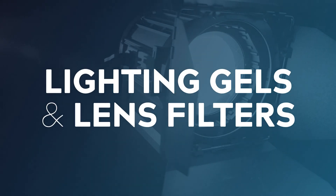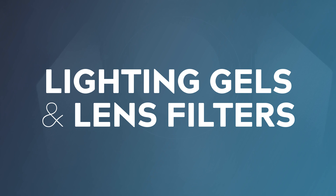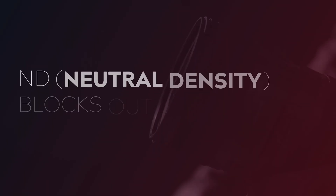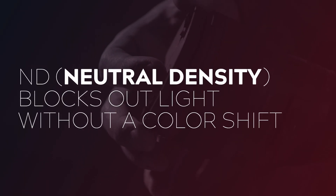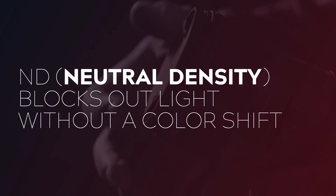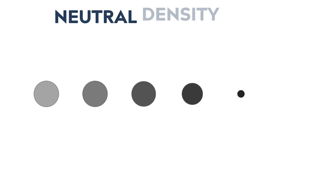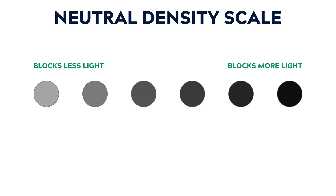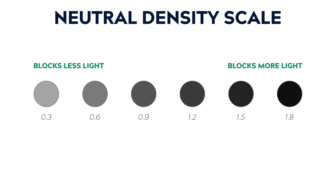Now let's look at how stops relate to filtration — lighting gels and lens filters. ND, or neutral density, is the type of filtration that blocks out light in a neutral way, meaning it doesn't create any color shift. Different grades of ND are measured in increments of 0.3 — so 0.3, 0.6, 0.9, 1.2, and so on. Every time you jump up the scale, that corresponds to a one stop change. So a 0.3 filter equals a one stop filter, and a 0.9 filter equals a three stop filter.